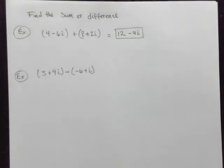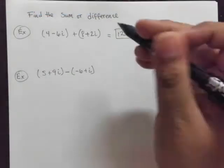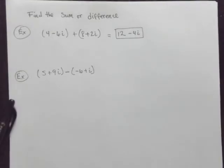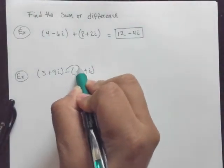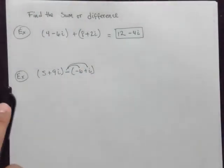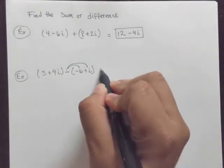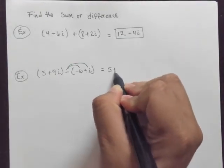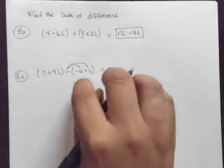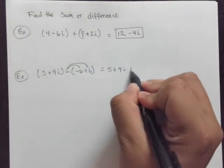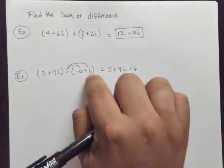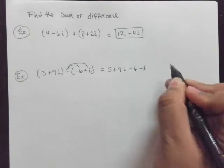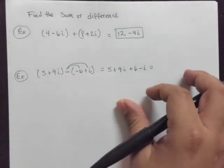So just be careful when you're keying something like that in. In this case right here though, we are subtracting. So we're going to have to do a little bit of distribution. And let's go ahead and do that now. So what does this equal? 5 plus 9i. And the negative negative makes for a positive 6. And negative and a positive makes for a negative i. So now we're safe and we can combine like terms.